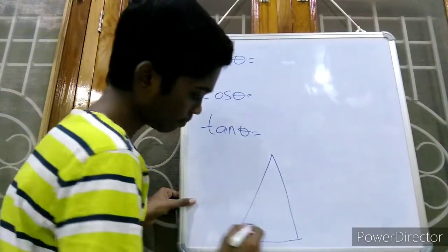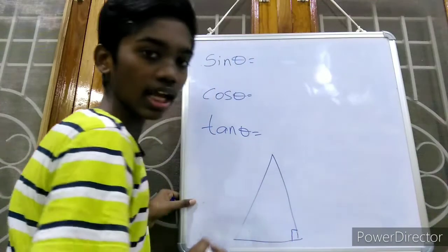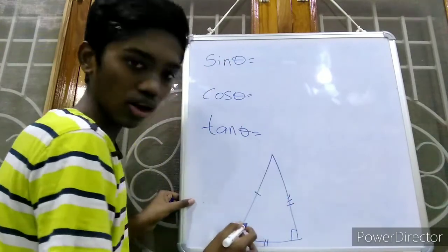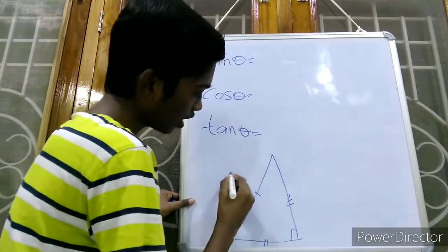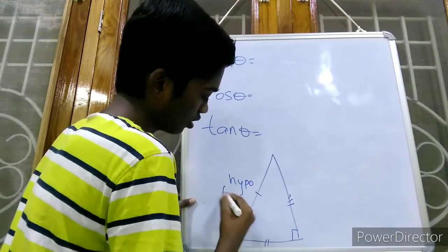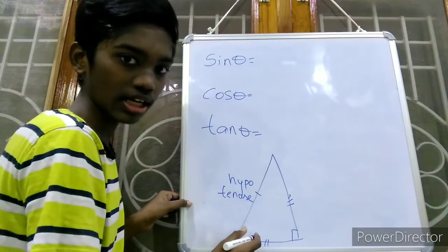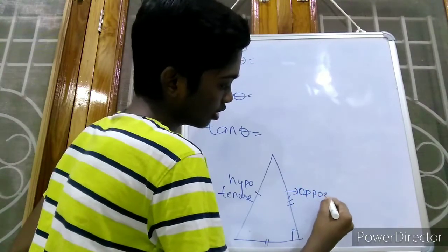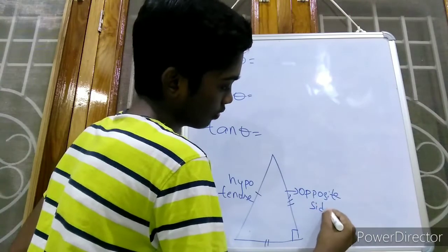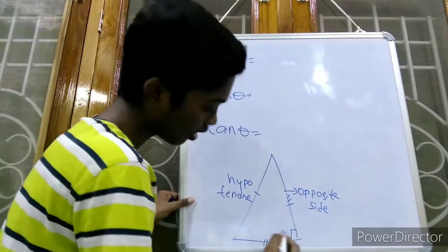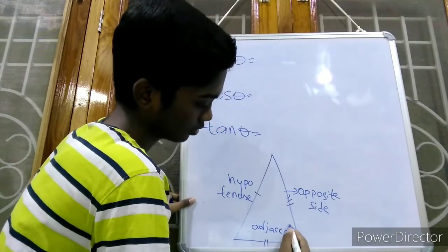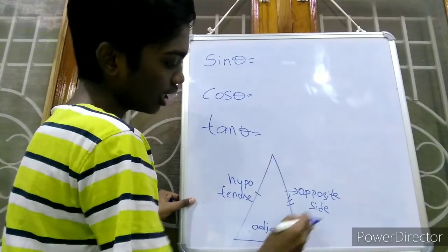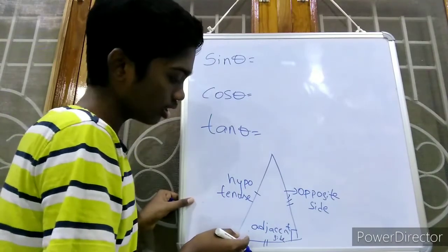If we observe, this is a right angle triangle. This side is called hypotenuse — you have to remember that. The longest side of this right angle triangle is called hypotenuse. This side is called opposite side, and this downward base is called adjacent side.